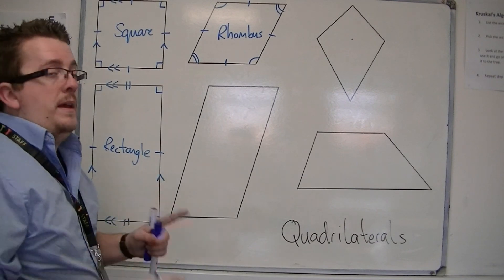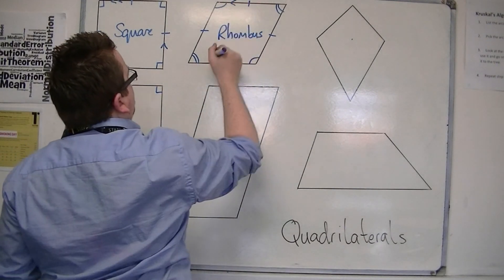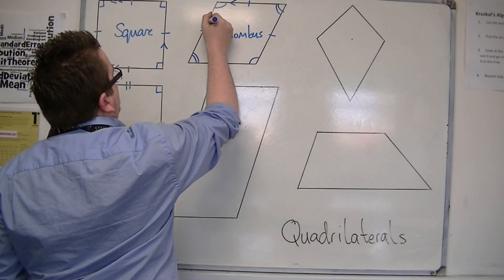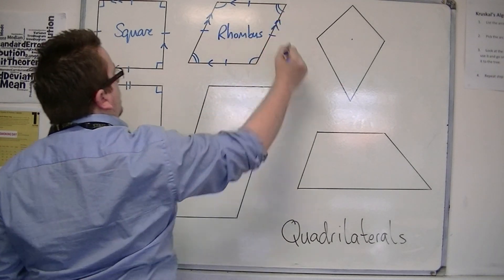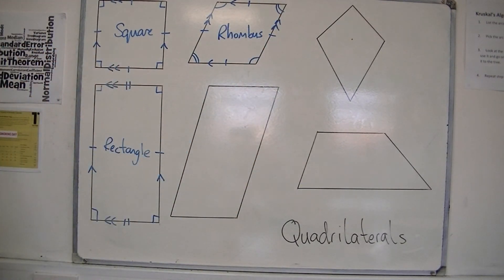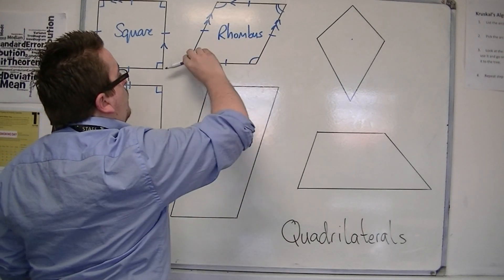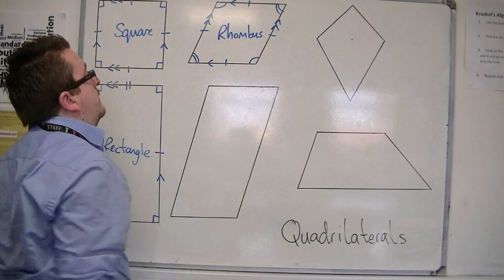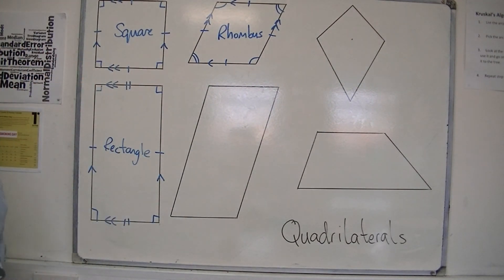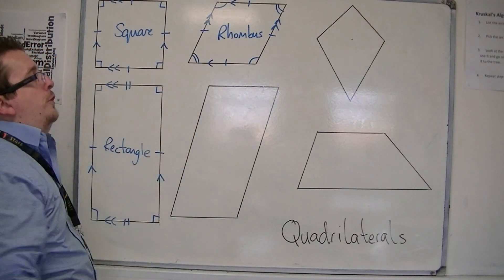It also has the two pairs of parallel sides. Lines of symmetry, so it has one going from corner to corner there, and one going from corner to corner there. And order of rotation would be two, like it was for the rectangle.